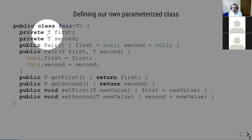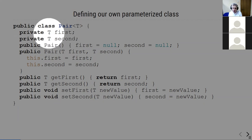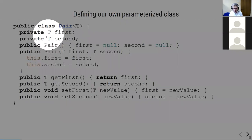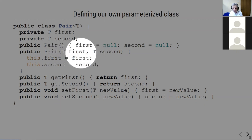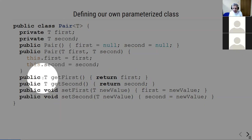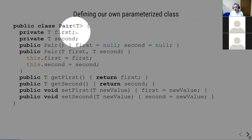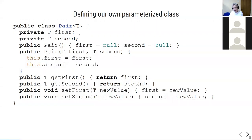On a syntax level, defining our own parameterized class is also straightforward. For example, we define a Pair class using angle brackets with T as the type parameter. We can use T throughout the class body: the first and second elements of the Pair are of type T. We don't know what type users will substitute, but we can refer to type T. We can write a constructor like Pair(T first, T second), so if parameterized with Manager, only managers can be passed. T can also be a return type — it's like a parameter that gets substituted when the class is used.